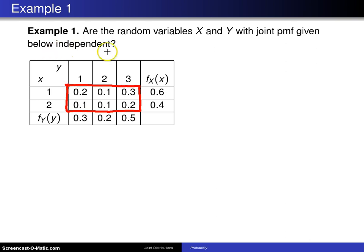And when we're asking whether or not those two random variables are independent, we're asking whether the joint probability mass function f of x, y is equal to the product of the marginal distributions for x and for y.